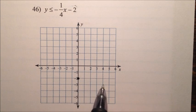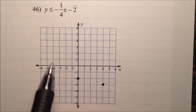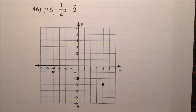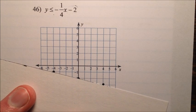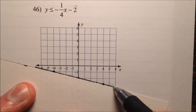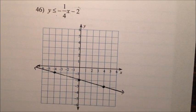So negative 1 fourth, or up 1 and back 4. And notice the line that we'll have is a solid line since we have that equal along with the less than. So we'll do a nice solid line, so we'll connect the dots here, there we go. So a nice solid line.